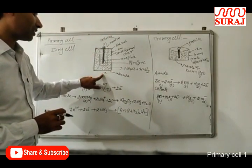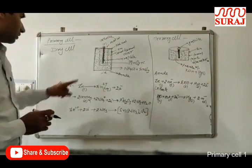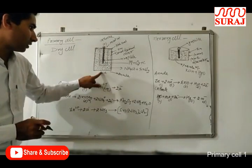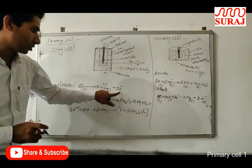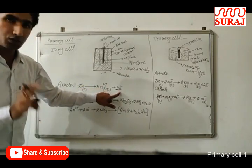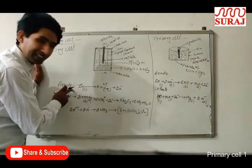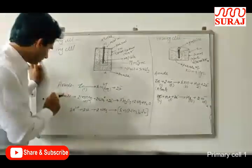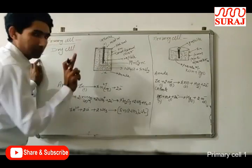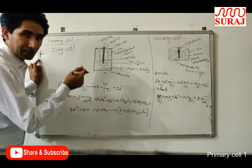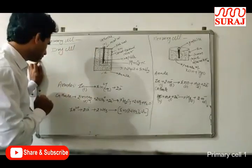At the anode, zinc changes into Zn²⁺ ions by losing 2 electrons — oxidation takes place at the zinc anode. These 2 electrons move from the negative terminal to the positive terminal when the circuit is connected.